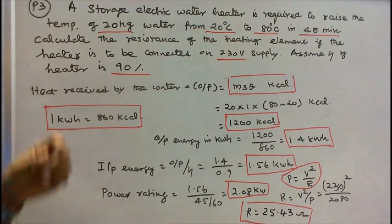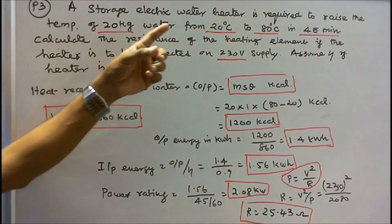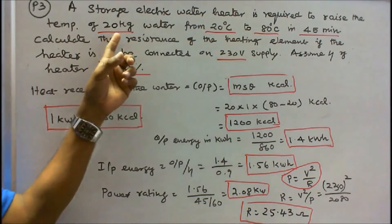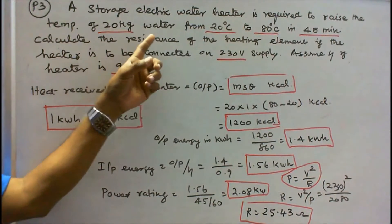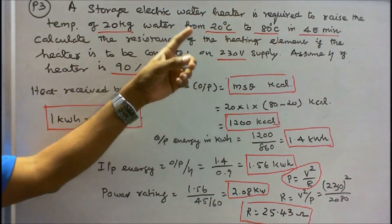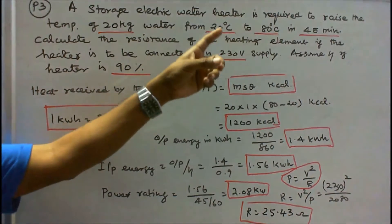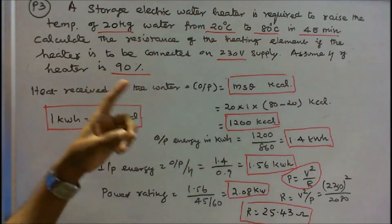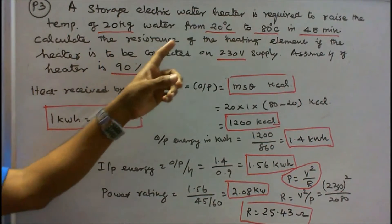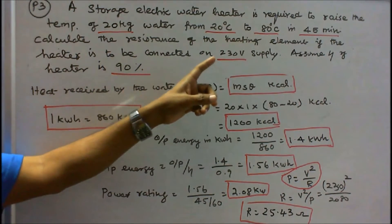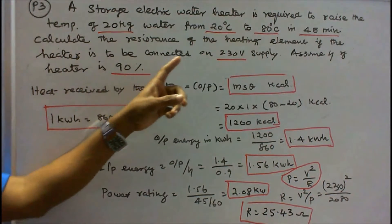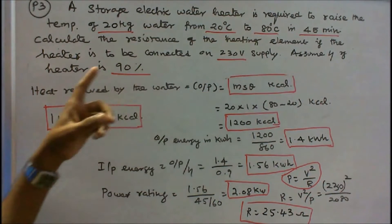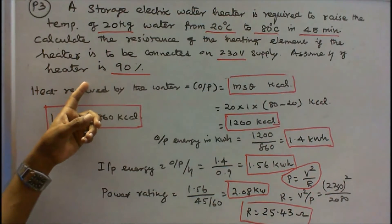Problem 3: A storage electric water heater is required to raise the temperature of 20 kg of water from 20 degrees centigrade to 80 degrees centigrade in 45 minutes. Calculate the resistance of the heating element if the heater is connected to a 230 volt supply. Assume the efficiency of the heater is 90%.